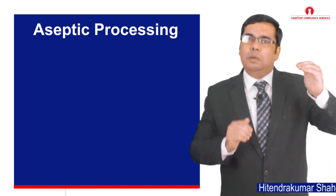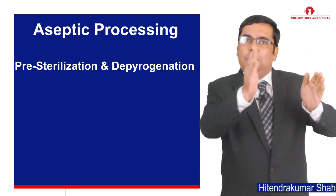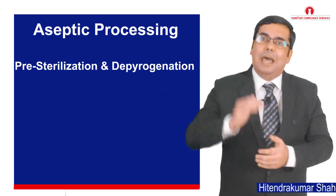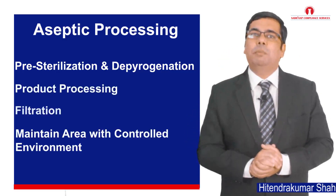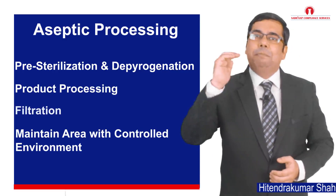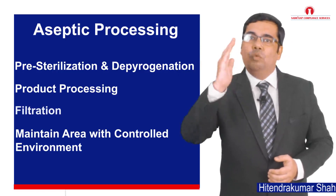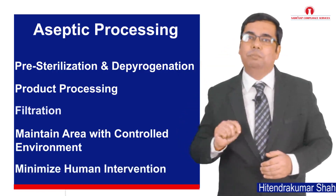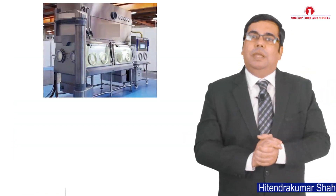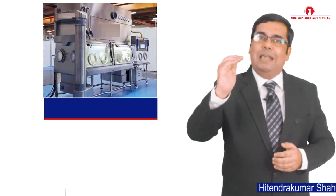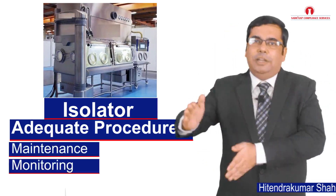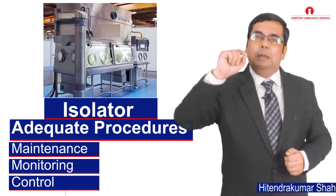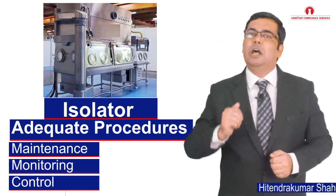Let us understand the basic steps in aseptic processing. Aseptic processing involves pre-sterilization and depyrogenation of all product parts or components that are in direct contact with the aseptic field product. The product is processed and filtered in a controlled environment where microbial and particulate levels are maintained below defined levels and where human intervention is minimized. Whenever possible, in new installations and upgrades, a well-designed isolator supported by adequate procedures for its maintenance, monitoring and control shall be implemented, offering better advantage over traditional aseptic processing.